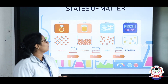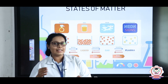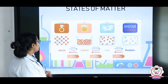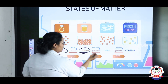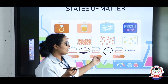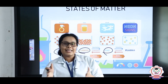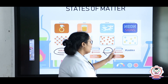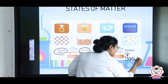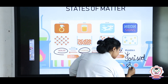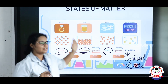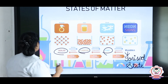Now let's see the states of matter — you can also call them different types of matter. There are actually four different types: first is solid, second is liquid, third is gas, and the last is plasma. Plasma is an ionized state of gas. Generally in this lesson we will talk only about solids, liquids, and gases in detail.